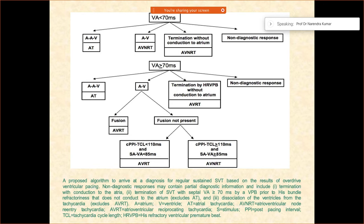Then, if the VA is less than 70 milliseconds, you try to do ventricular pacing. If you did ventricular pacing and you see AAV response, it is characteristic of atrial tachycardia. Similarly, if you get a VA-HIV response, this is characteristic for typical AVNRT.